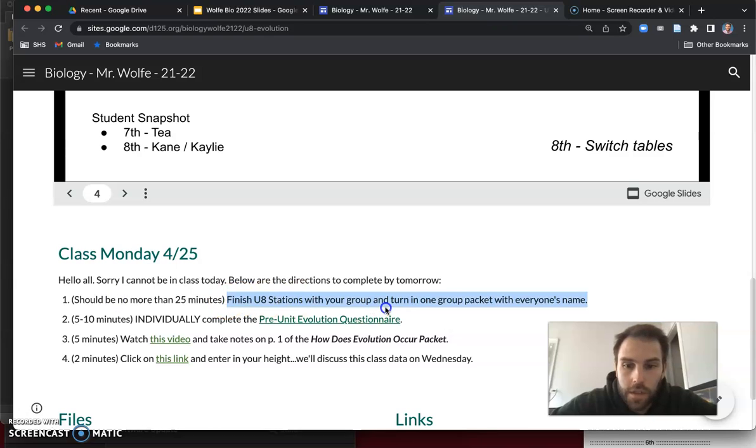At this point you should have finished the unit aid stations one through five and turned in one of those unit aid station packets, just one per group but everyone's name on it. You should have also completed the pre-unit evolution questionnaire. If you haven't done so, make sure to do so. Where we're at right now is you should have clicked on this video and you're watching this video now.